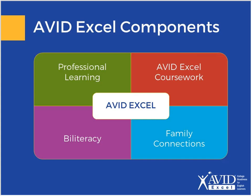Our last component is biliteracy. From the start, we encourage our Avid Excel sites to celebrate biliteracy — to explain to our students that biliteracy is an asset. Districts should explore how heritage language courses can be made available to students as a pathway to biliteracy in AP language in high school. Additionally, districts should gather information about their state seal of biliteracy and share that information readily with students, families, and teachers.